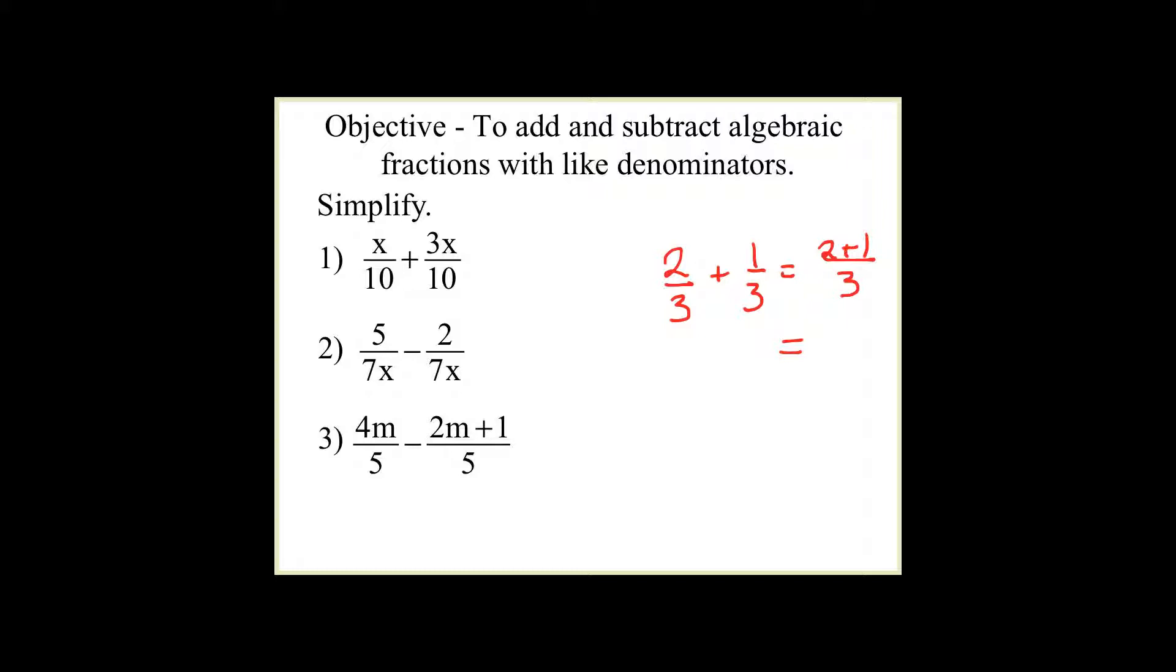When I simplify that, that becomes 3 thirds, which is equal to 1. So notice the only thing I'm manipulating are really the numerators. We're going to do the same thing with the variables.